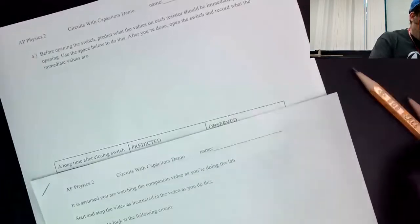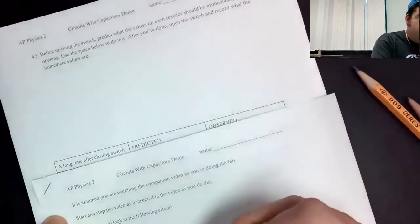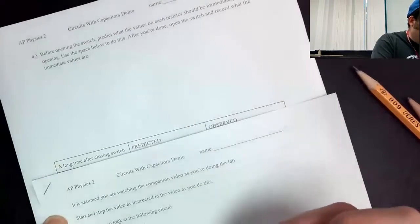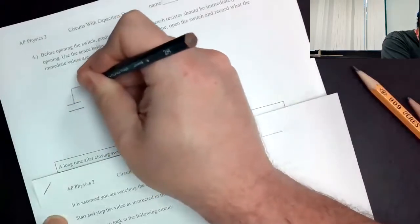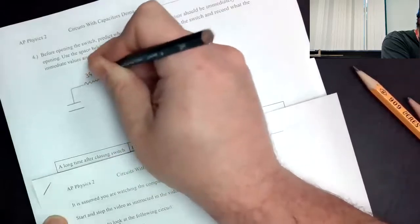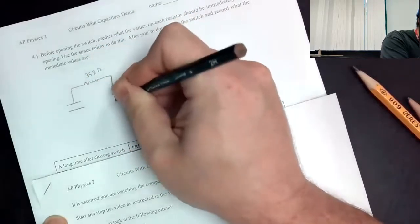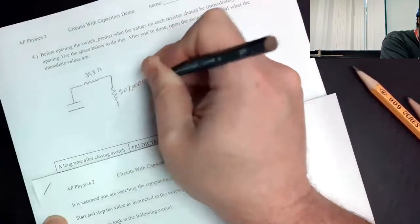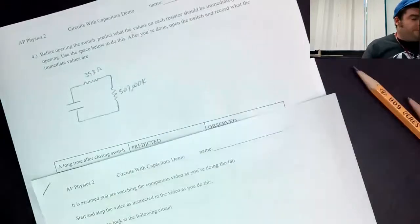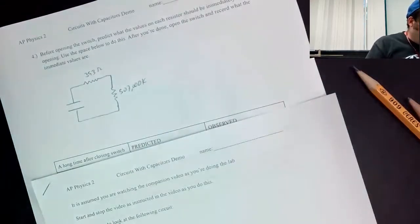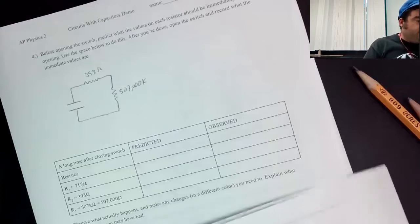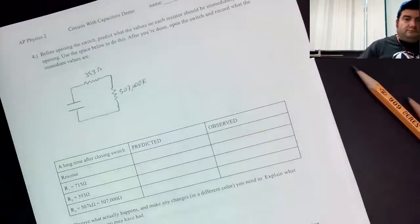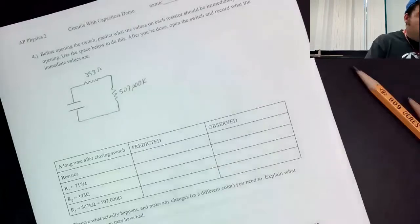If this is the circuit, once we open the switch this part is isolated. The power supply and the 715 ohm resistor are no longer in it. So all we have is the one farad capacitor, a 393 ohm resistor, the big resistor, and that's it. As we try to consider what will happen when we disconnect this, as soon as we do, the capacitor is going to begin discharging.